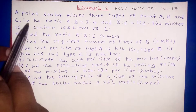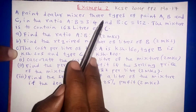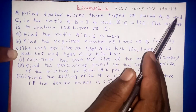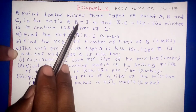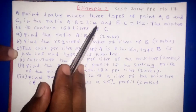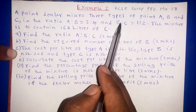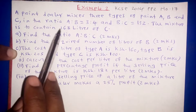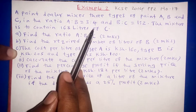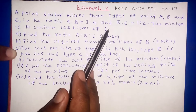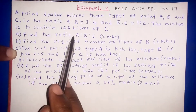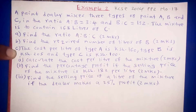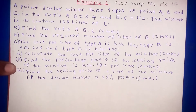The question reads: a paint dealer mixes three types of paint A, B, and C in the ratio A to B is 3 to 4, and the ratio of B to C is 1 to 2. The mixture is to contain 168 liters of C. Part A asks us to find the ratio of A, B, and C.